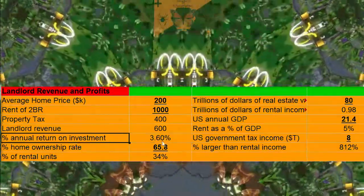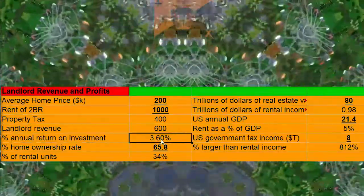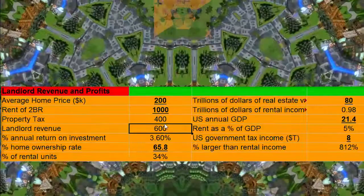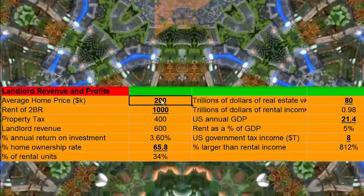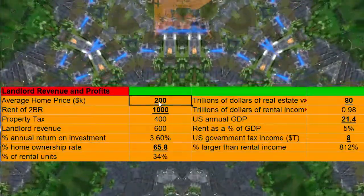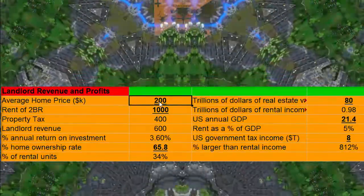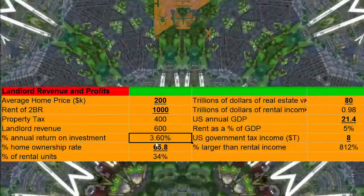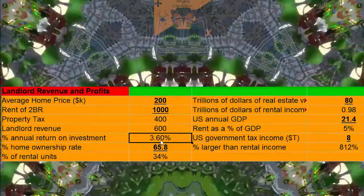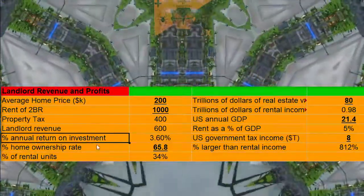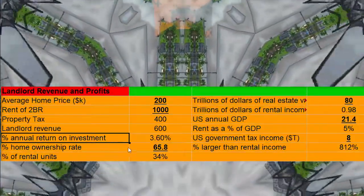This is your annual return on investment — you just take your landlord revenue times 12, and then divide it into the $200,000 figure. You get 3.6% annual return on investment for the landlord.